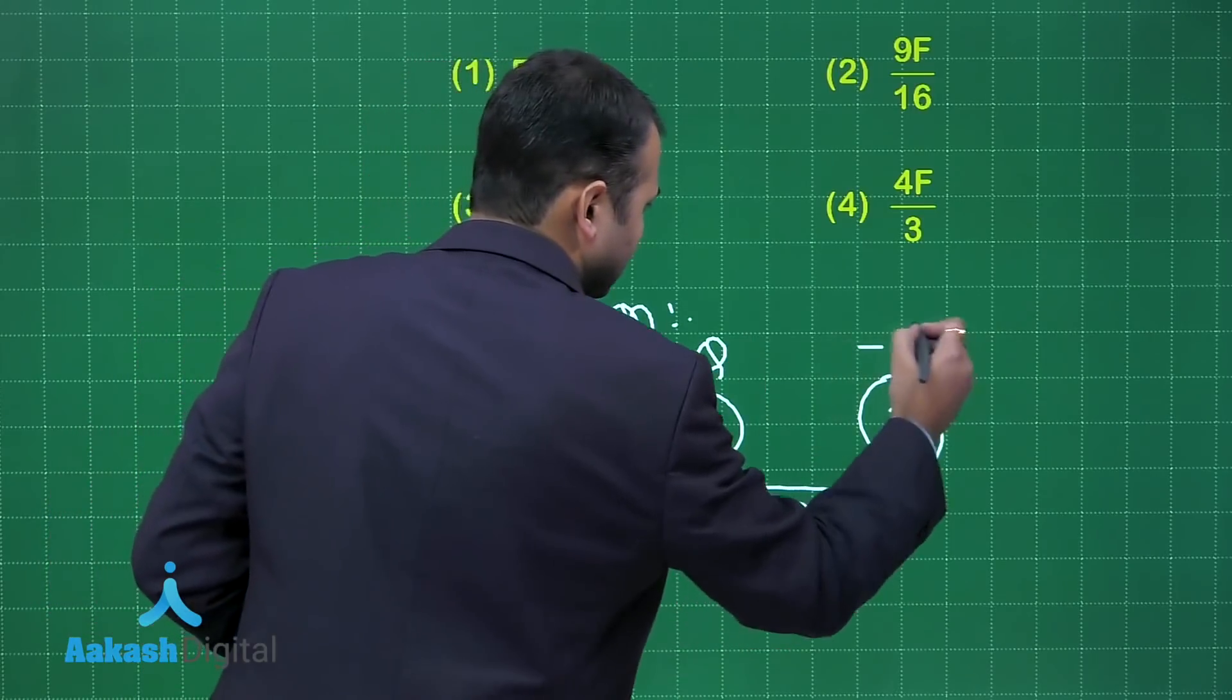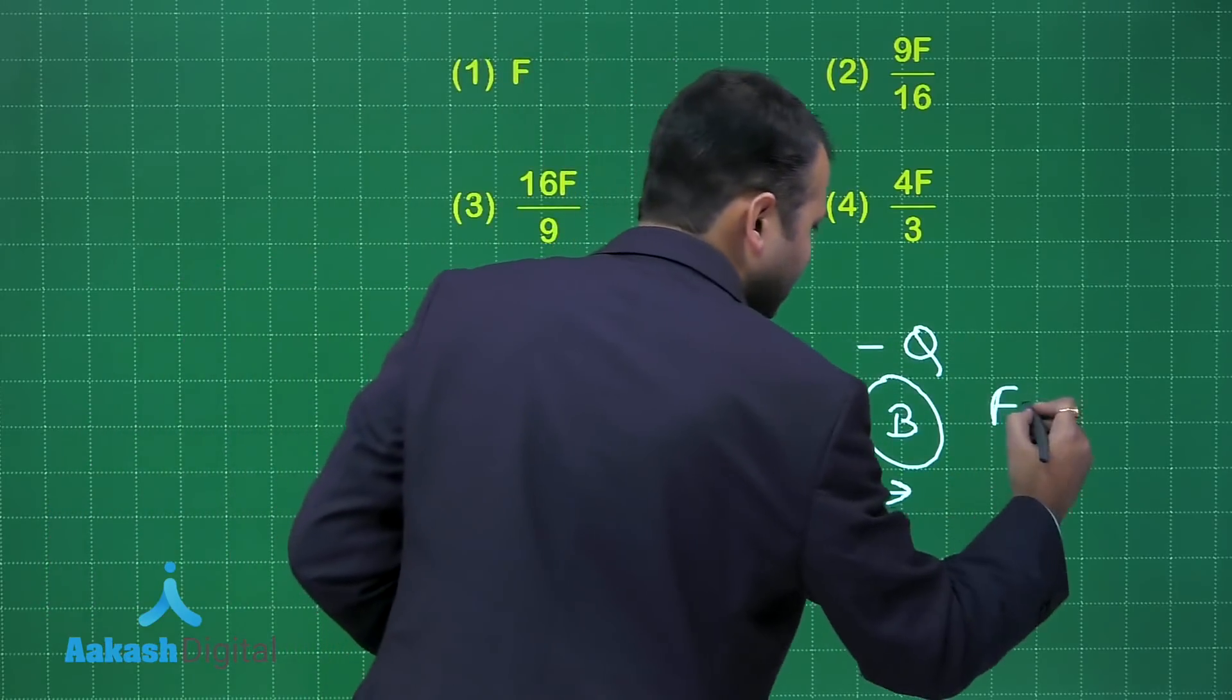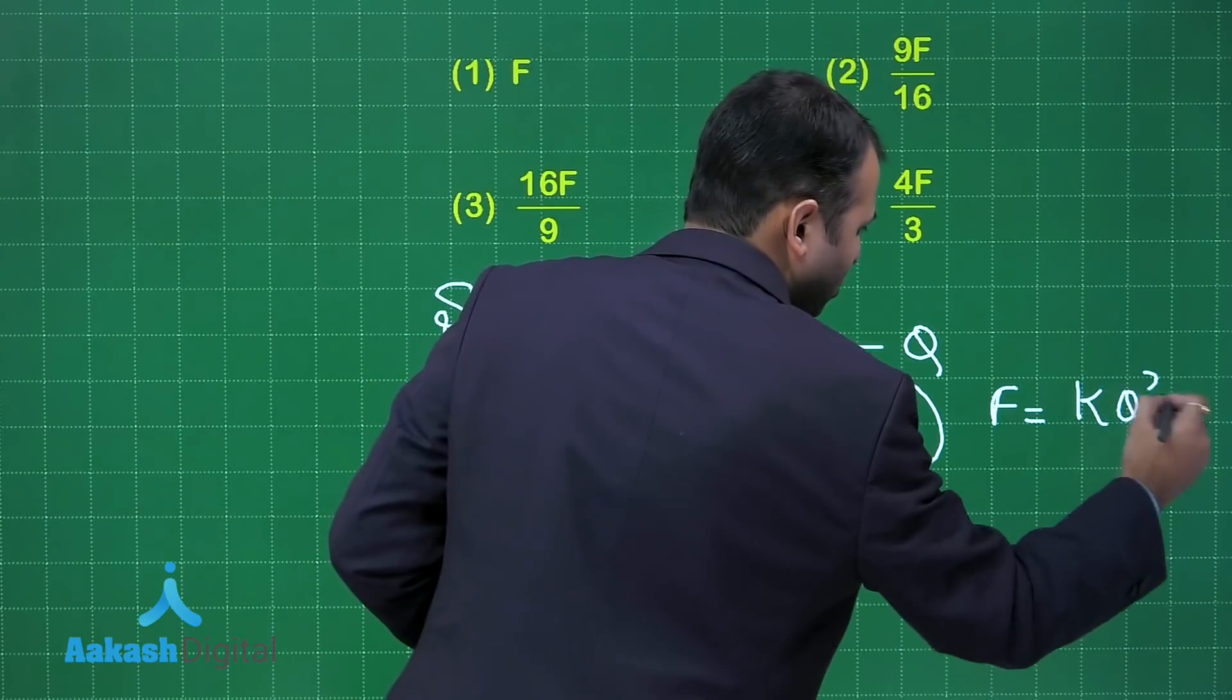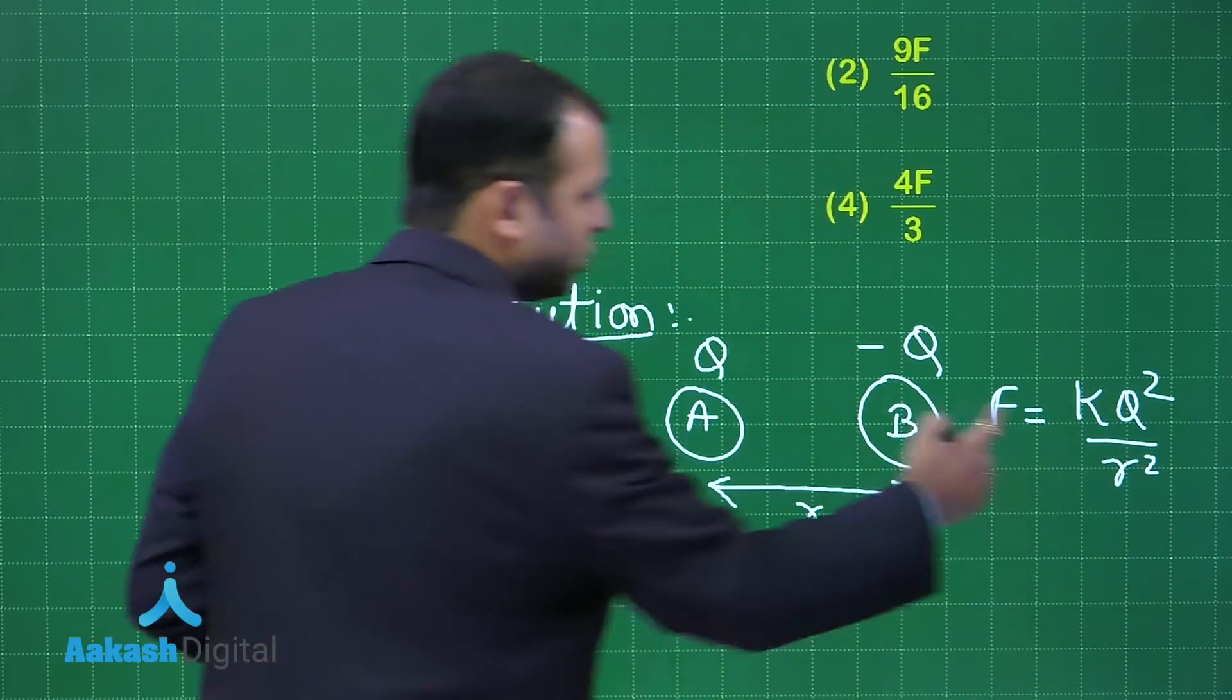So charge on this is Q and this is minus Q. So F would be simply on magnitude that is KQ square upon r square. I'm talking just about the magnitude.